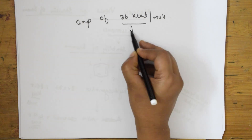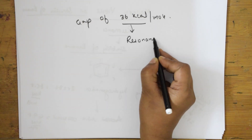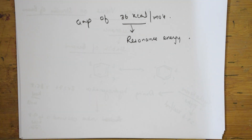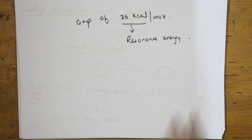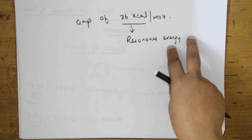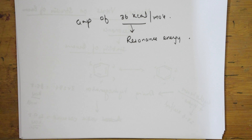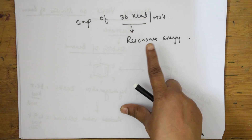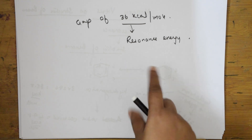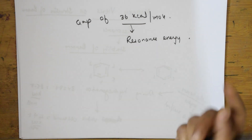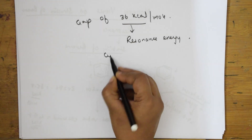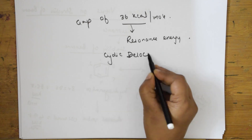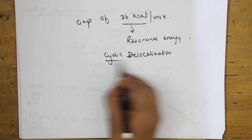This energy difference of 36 kilocalories per mole is called resonance energy. One mole of benzene possesses 36 kilocalories per mole less energy than it theoretically should contain — and this concept explains the resonance energy in benzene. We will see a graph of resonance energy in the next video. After the resonance concept, we will study cyclic delocalization.